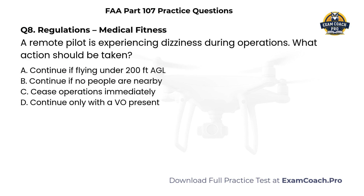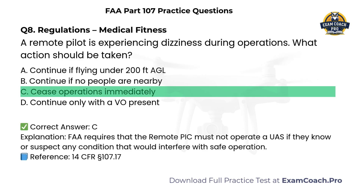Regulations. Medical fitness. A remote pilot is experiencing dizziness during operations. What action should be taken? A. Continue if flying under 200 feet AGL. B. Continue if no people are nearby. C. Cease operations immediately. D. Continue only with a visual observer present. Correct answer: C. The FAA requires that the remote pilot in command must not operate a UAS if they know or suspect any condition that would interfere with safe operation.